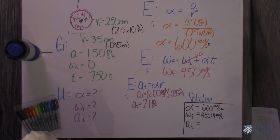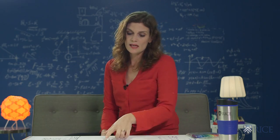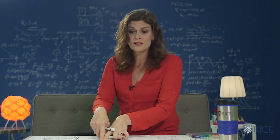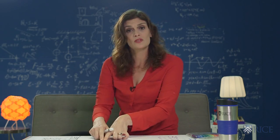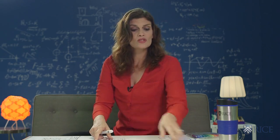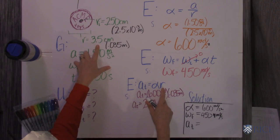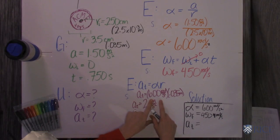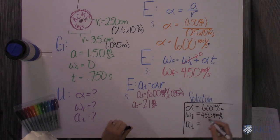And then, this tangential or linear acceleration of a point is, we're going to go back and use that same formula, but rearrange for linear acceleration, but now we're talking about a point on the outer edge. And so we use the 3.5 centimeters converted to meters, multiply that times your angular acceleration, and you get that your tangential acceleration is 21 meters per second squared.